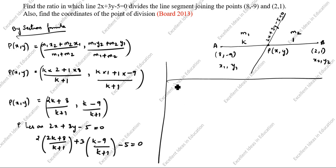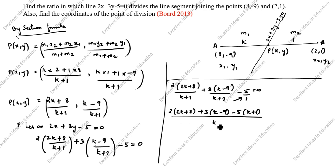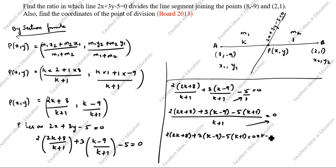Next, since the denominator is the same: 2k plus 8 plus 3k minus 9 divided by k plus 1 minus 5 equals 0. Cross-multiplying, (k plus 1) goes to the other side, giving: 2k plus 8 plus 3k minus 9 minus 5(k plus 1) equals 0.